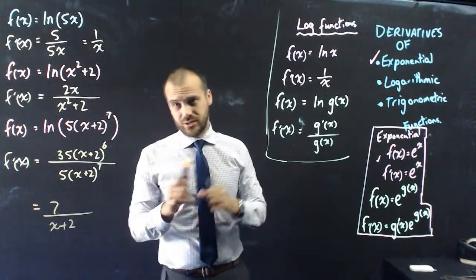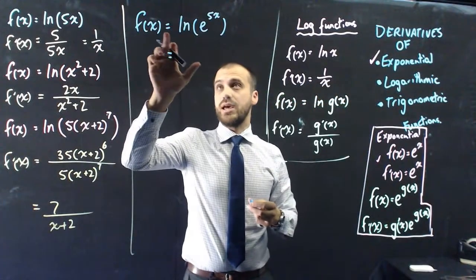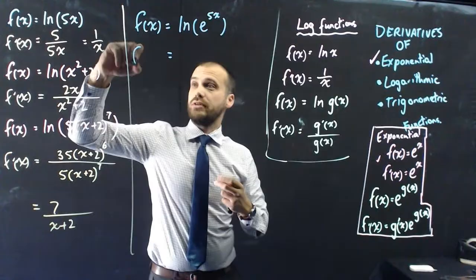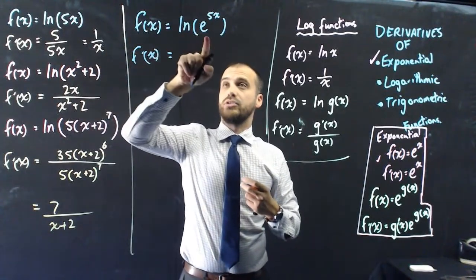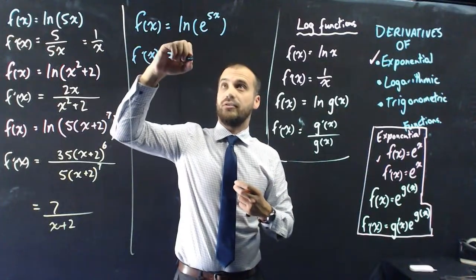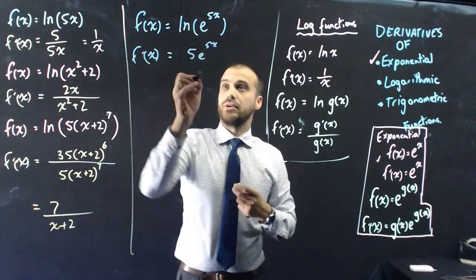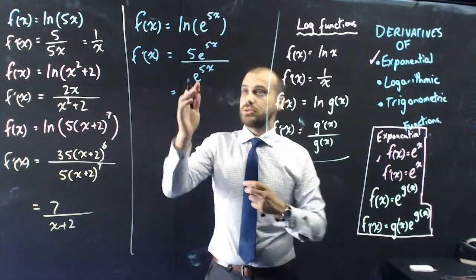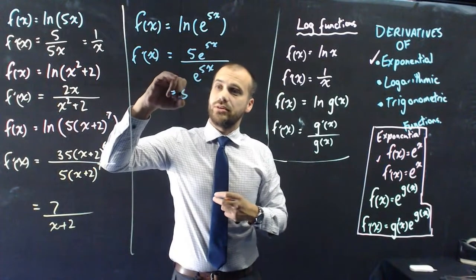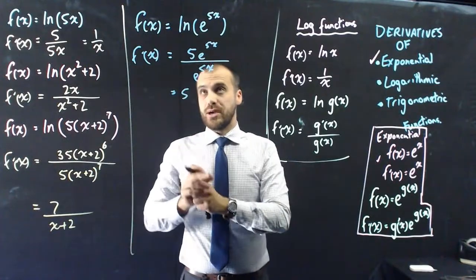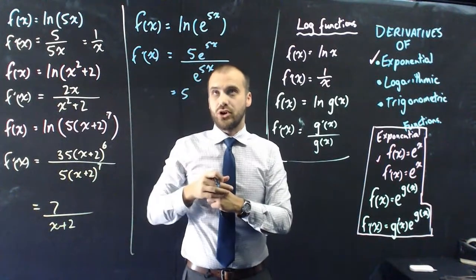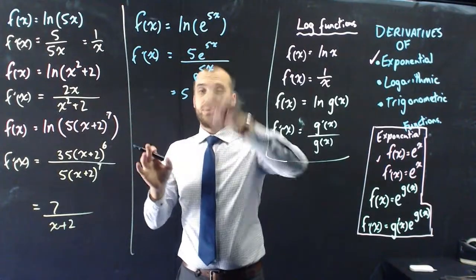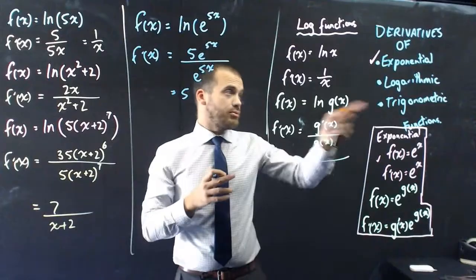I'll show you one more to combine exponentials and logs. If f of x equals ln of e to the 5x, then f dash of x equals the derivative of e to the 5x - which is 5e to the 5x - over the original e to the 5x. The e to the 5x terms cancel and we're left with just the number 5. So you can see we can combine our knowledge of exponentials and logs.